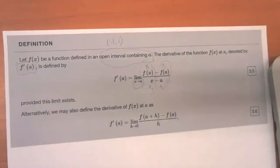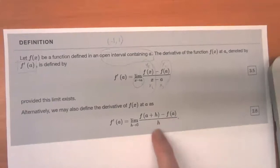And here's an alternative definition. We can also define the derivative of F of X at A as F prime of A is equal to the limit as H approaches zero of F of A plus H minus F of A divided by H.